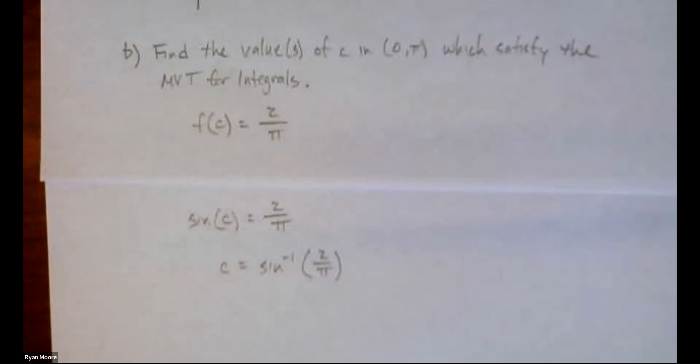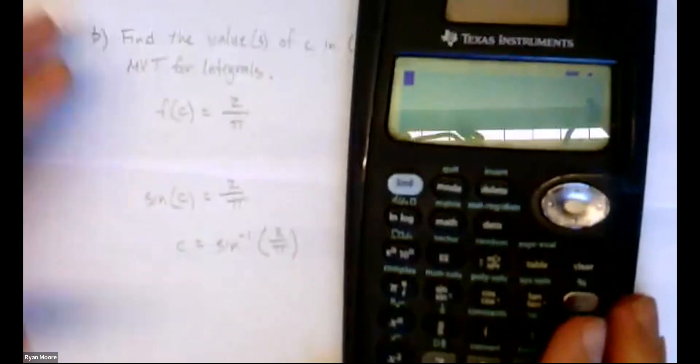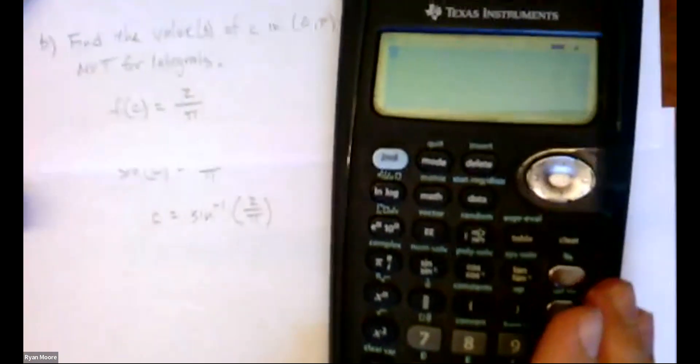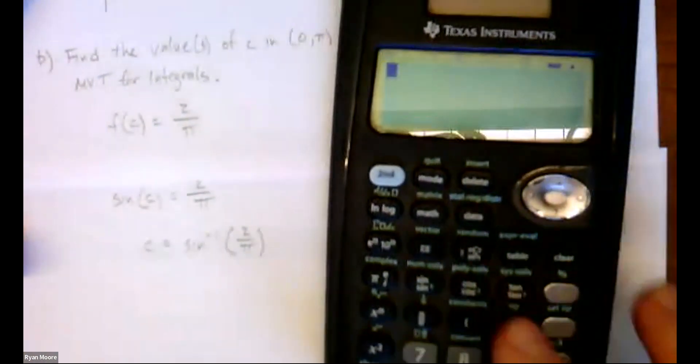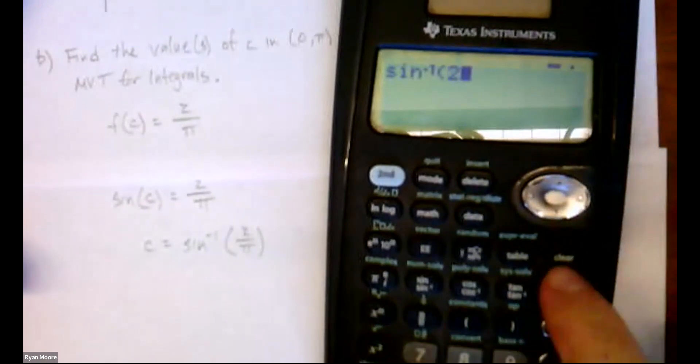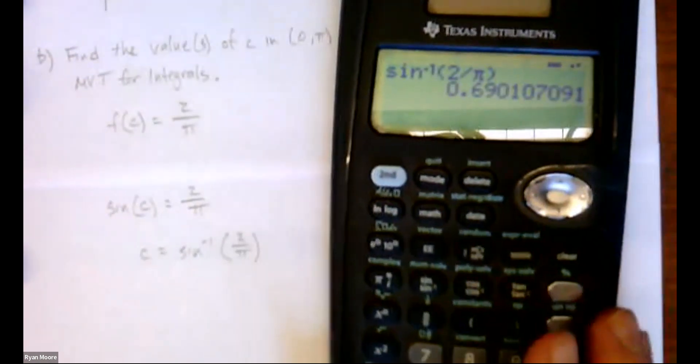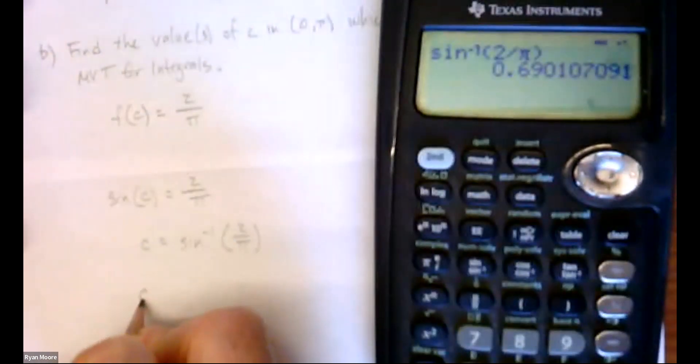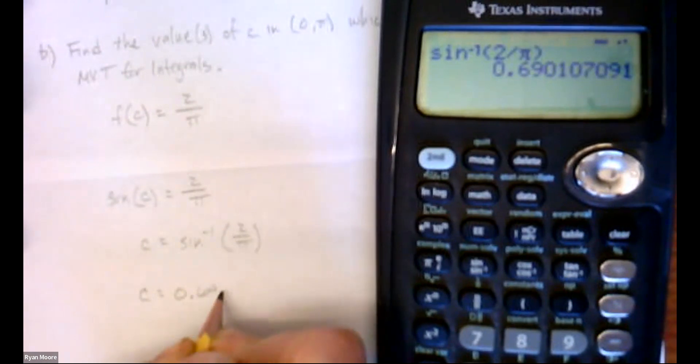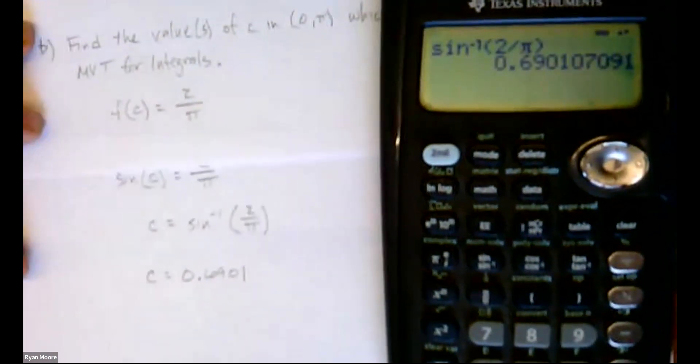Whereas the sine of C equal to over pi, and we just need to take an arc sine, inverse sine of both sides. Now this, let's go ahead and round here. This is not going to be, these are not going to be clean answers. So if we go with inverse sine two over pi, at least I don't think it's going to be good. Your calculator is going to give you one value. Six, nine. Let's go to four places. Six, nine, oh, one.